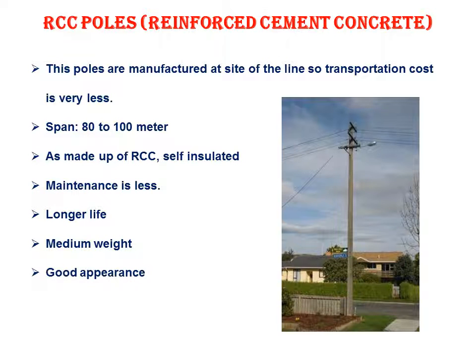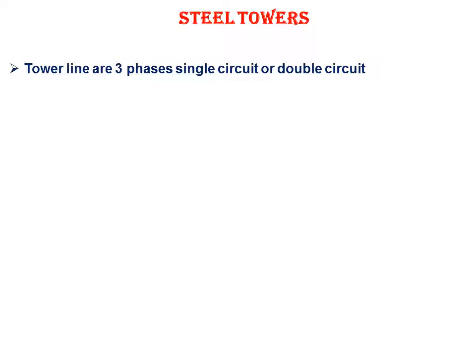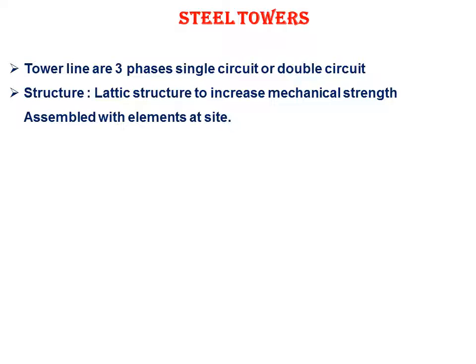RCC poles have medium weight. Next is the steel tower. This is used for high voltage transmission lines. The tower can be single circuit — carrying only three conductors — or double circuit, carrying six conductors, three on the left side and three on the right side. The structure is a lattice structure to increase mechanical strength, assembled with elements at the site where it is to be installed.